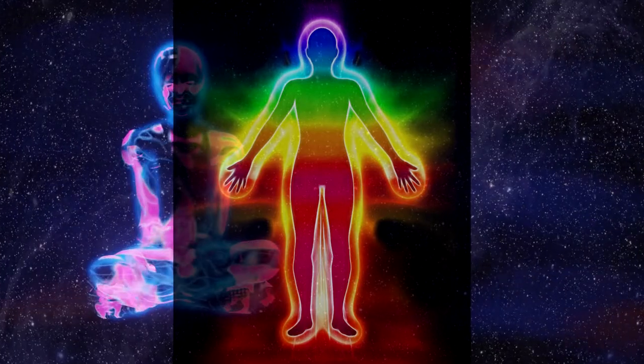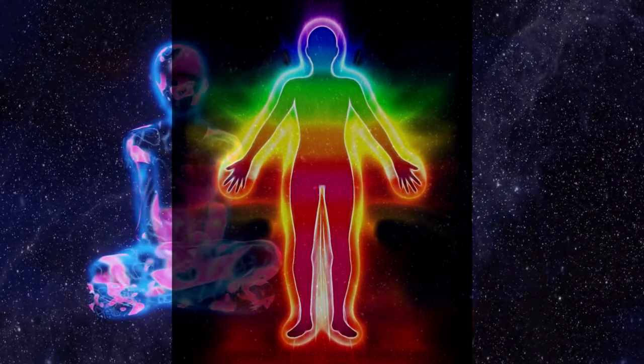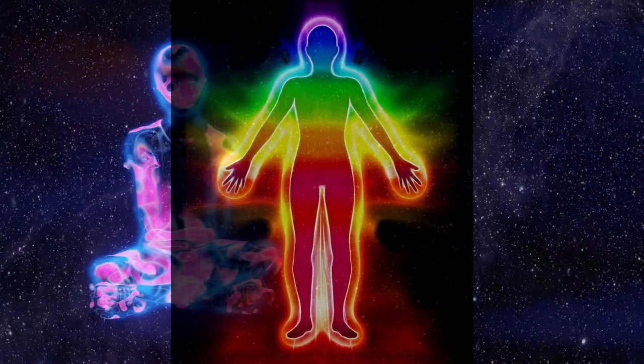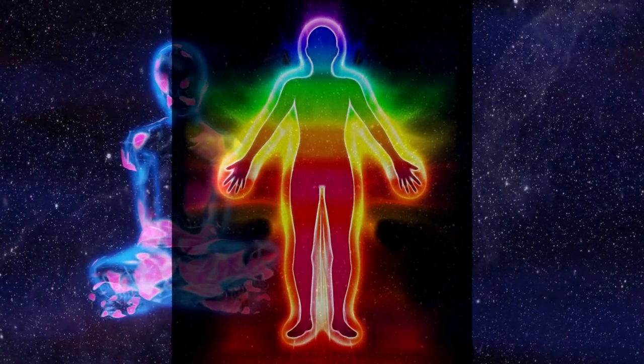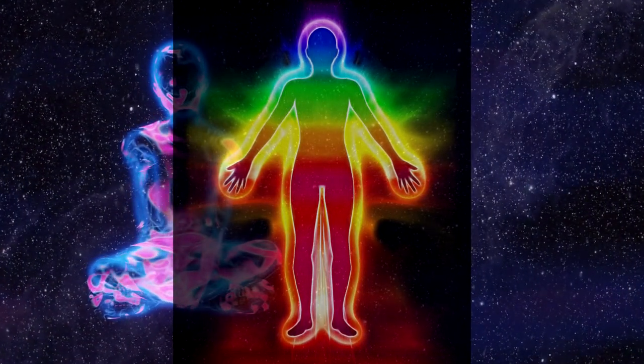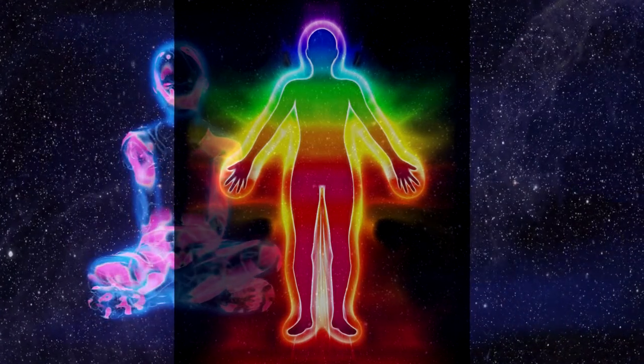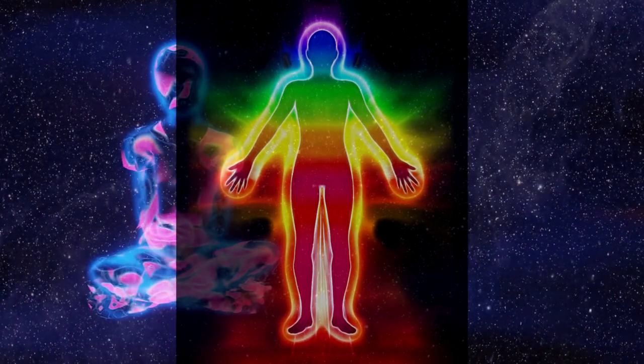Aura is the layer of energy which interconnects all other subtle bodies and also acts like a shield, covering and protecting our more refined subtle bodies like the mental, emotional, spiritual, and astral bodies.